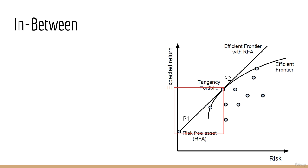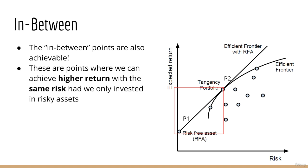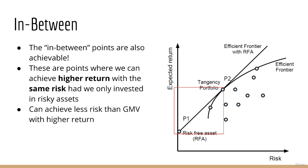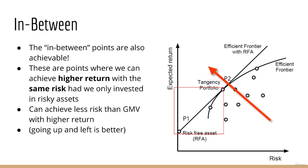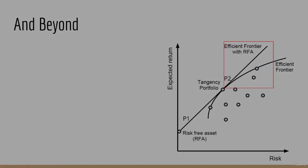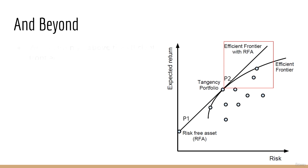The interesting part is the points in between. These points are also achievable, and they represent portfolios where we can obtain higher return with the same level of risk had we only invested in risky assets. Furthermore, we can obtain even less risk than the minimum variance portfolio and still achieve higher return compared to it. In a risk-return plot, going upper-left is always better — higher return and lower risk — and this line represents portfolios which achieve exactly that.